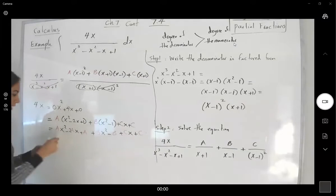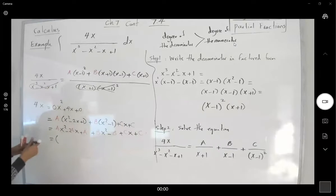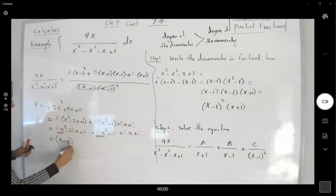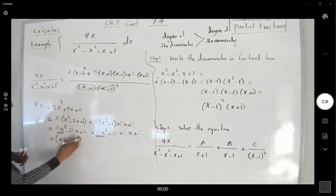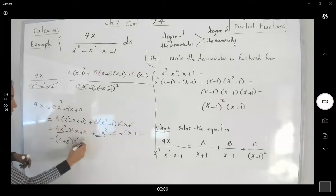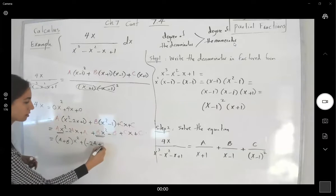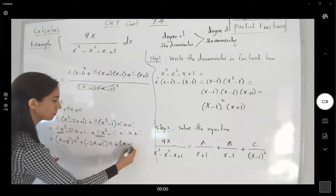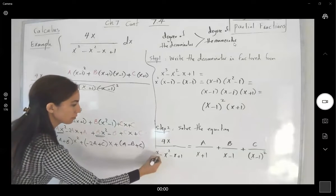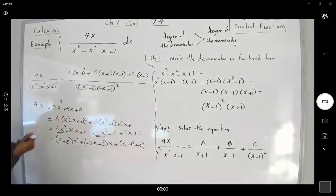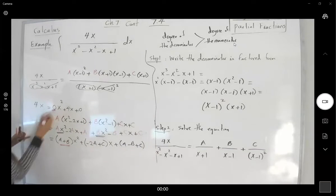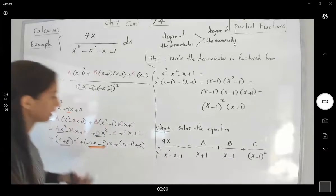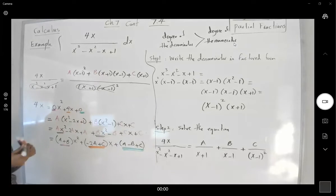If you factor out x squared, the coefficient is A plus B. For x itself, you get negative 2A plus C. And the constant is A minus B plus C. Setting these equal: A plus B equals 0, negative 2A plus C equals 4, and the constant A minus B plus C equals 0.